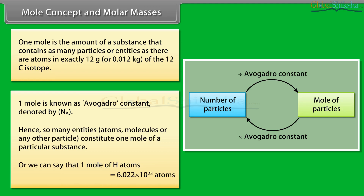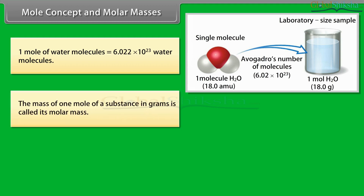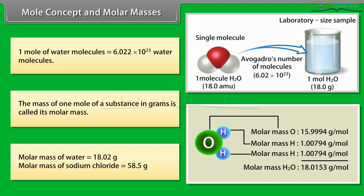One mole of H atoms equals 6.022 × 10²³ atoms. One mole of water molecules equals 6.022 × 10²³ water molecules. The mass of one mole of a substance in grams is called its molar mass. The molar mass of water is 18.02 grams and the molar mass of sodium chloride is 58.5 grams.